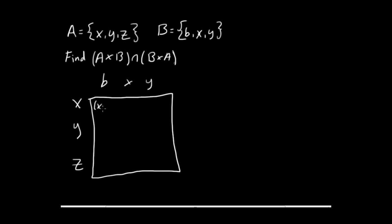We'll start drawing our ordered pairs: X and b, X and X, X and Y. And remember that since you're getting the cross product of A times B, the first element in the ordered pair is always going to be an A element. In this case, there's some shared elements, so it'll look like that's an element from B, but really that's A's X, not B's X. Go on down and finish out our table. Okay, that's the Cartesian product of A times B.